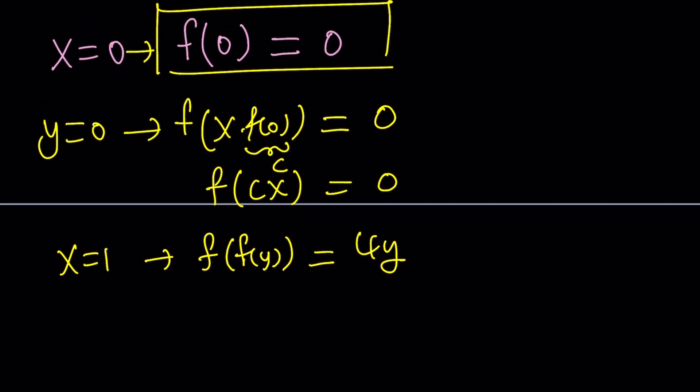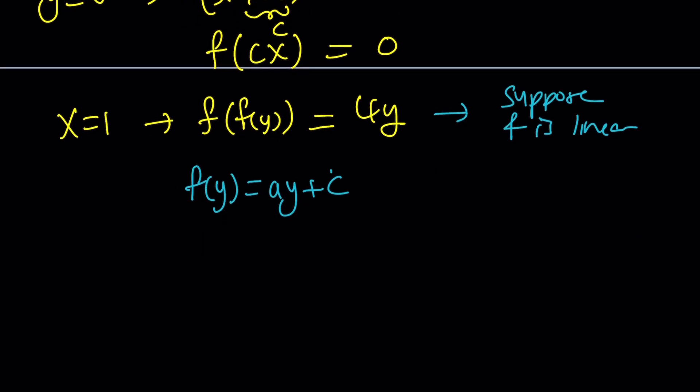So let's go ahead and digress a little bit. Suppose and by the way we were not told that f is linear but suppose f is linear and this is what happens. Since f is assumed to be linear f(y) we can basically write as ay plus c. And then if you replace f(y) with ay plus c then you're going to be getting something like f(ay plus c) for f(f(y)).